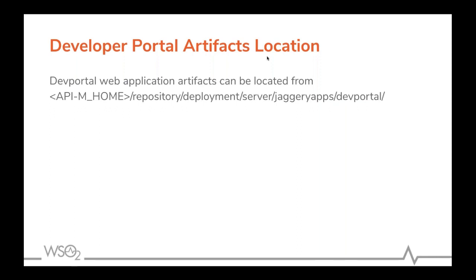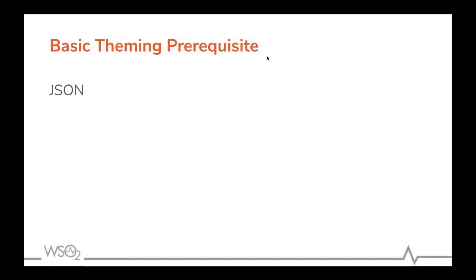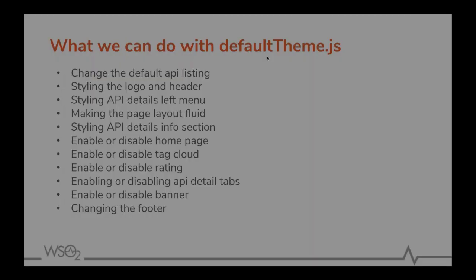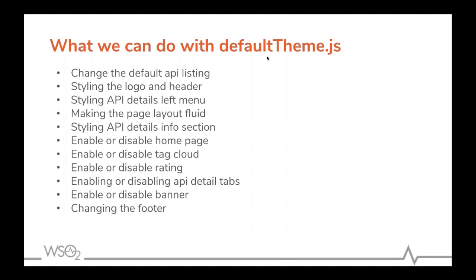You can locate the web application artifacts in the repository development server Jaggery apps folder, which is the important folder in the API Manager distribution. All you need to know before starting to theme the dev portal is basic knowledge about JSON, and some little knowledge of CSS will also help. From the default theme you can enable or disable API detail tabs, rating, the home page, tag cloud, footer, banner, and many more.